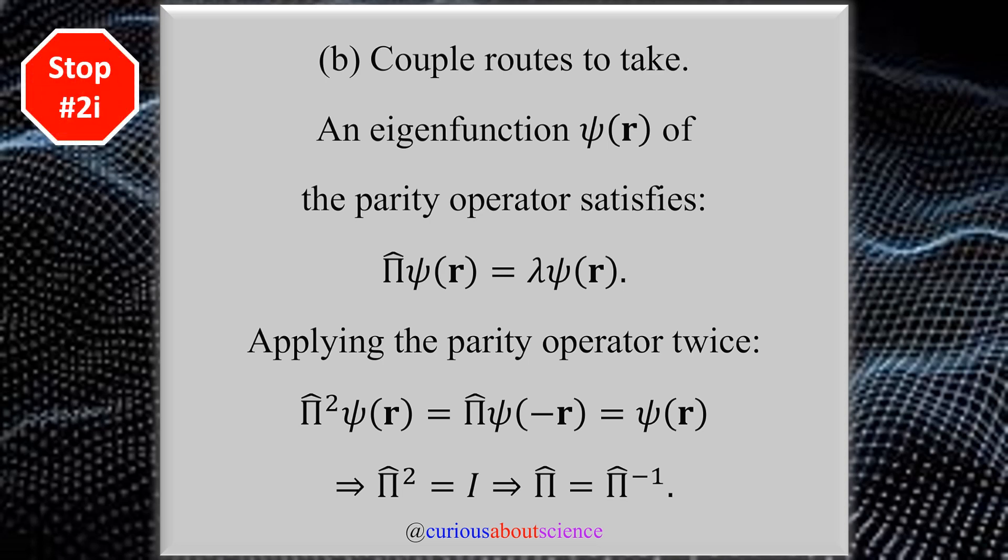Now when we want to prove what the eigenvalues are of the parity operator, we could take a couple routes. We could do a couple word salad arguments, but I think showing back the math is more important. In this route, what we're going to focus on is the parity operator only. We need to create an eigenfunction ψ(r) of the parity operator that satisfies the eigenvalue equation, which we saw back in chapter three in equation 3.22.